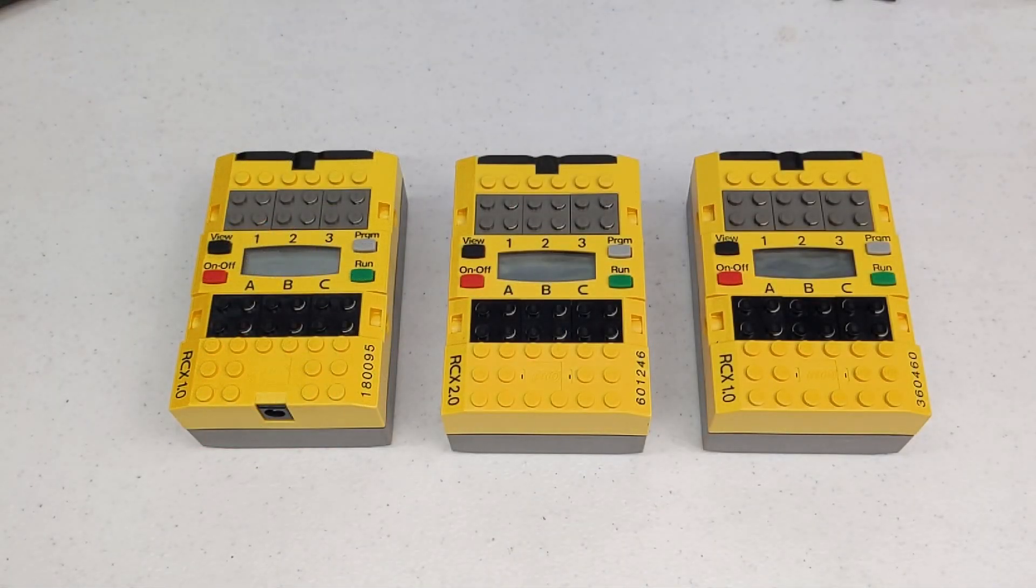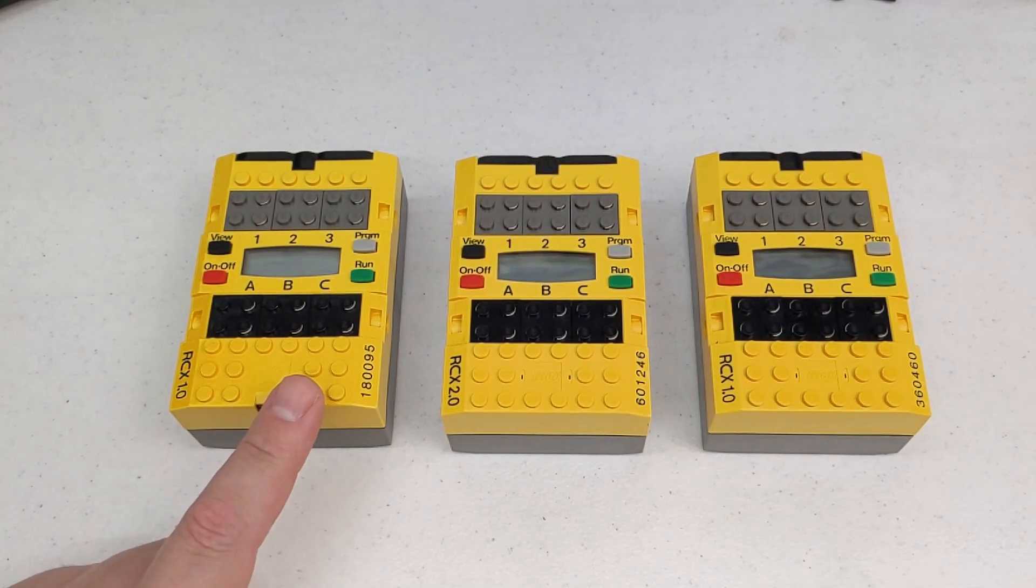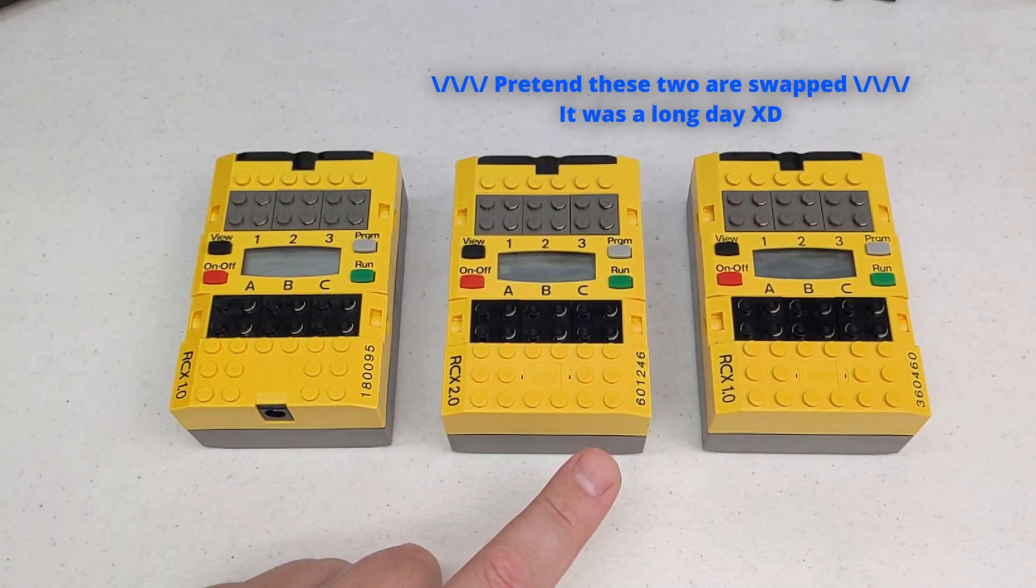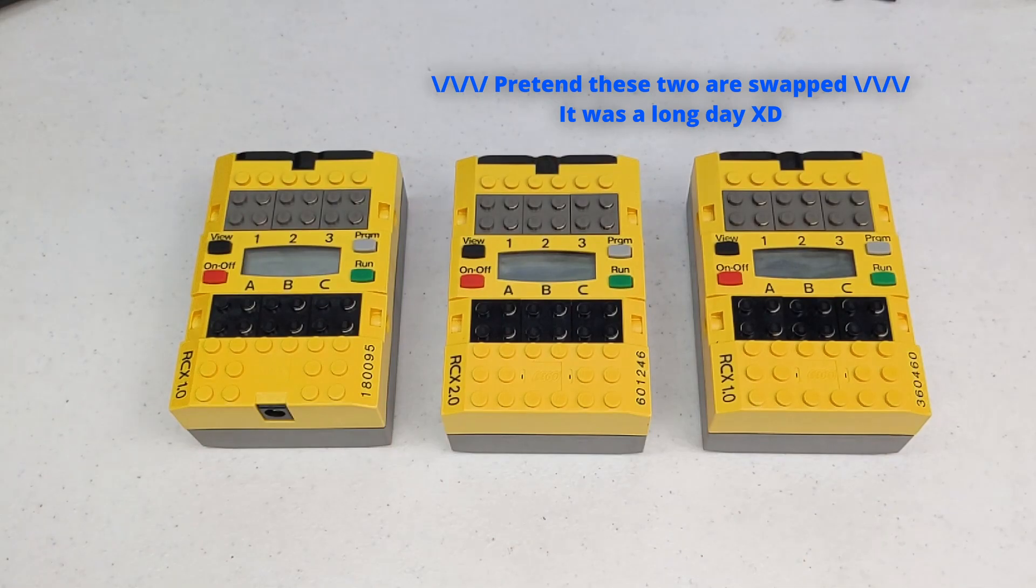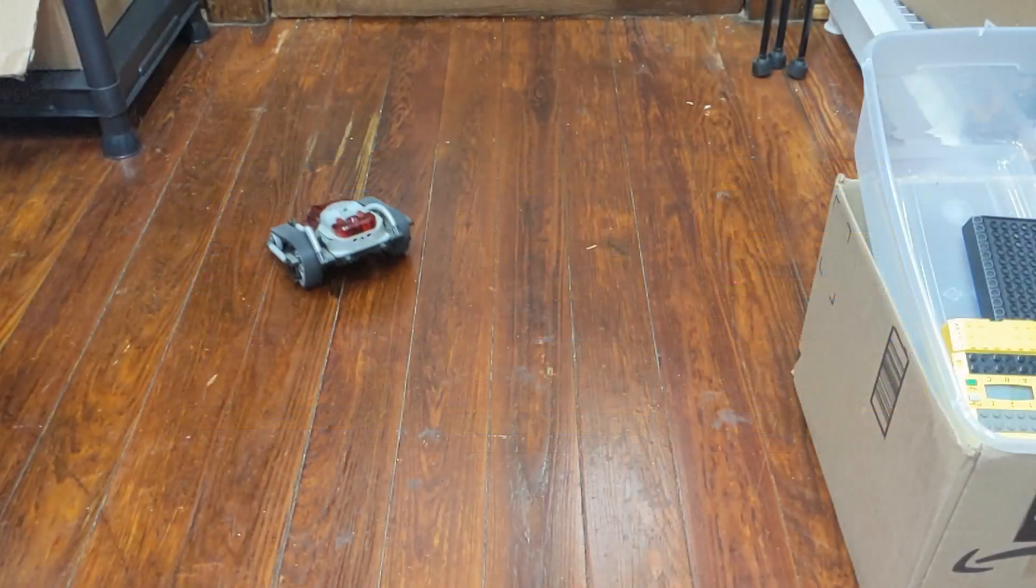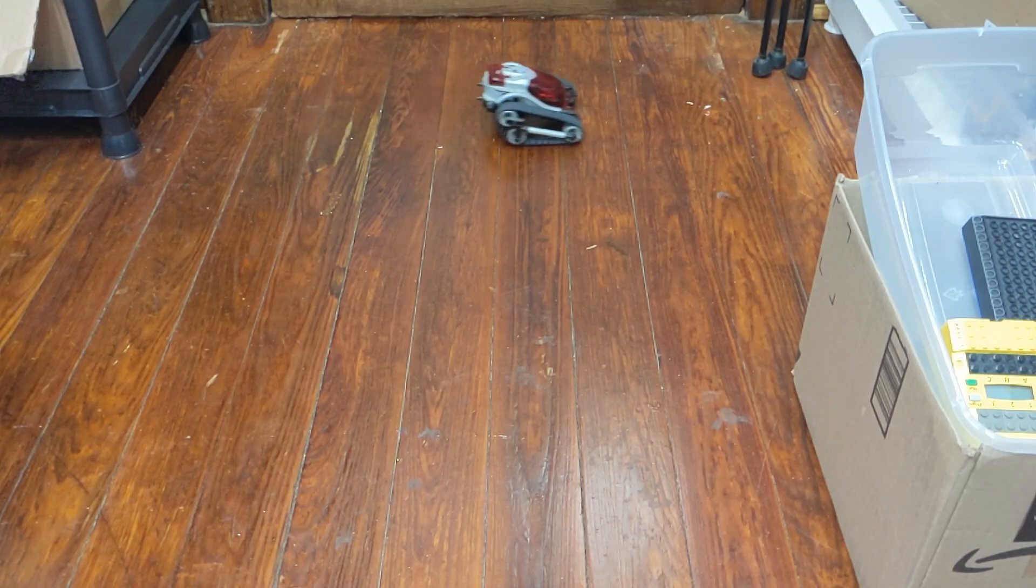While there are many internal revisions of the RCX, there are three versions that are externally identifiable. The 1.0 version with the external power jack, the 1.0 version without the power jack, and the 2.0 version which was never released with the power jack. The main difference I'm aware of is that the 2.0 version can talk to the Spybotics line of Mindstorms products.